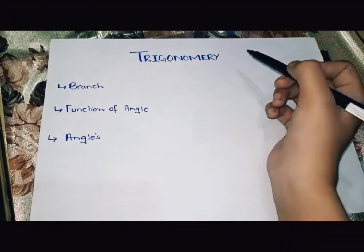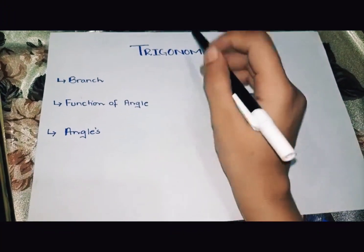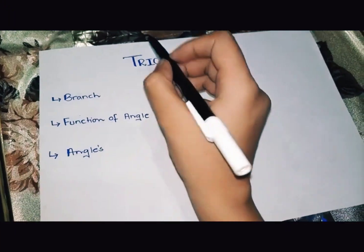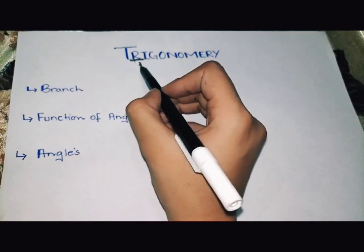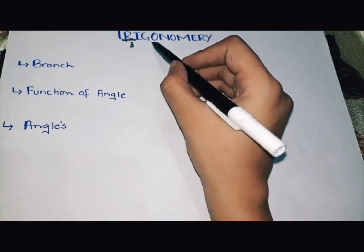Asalaam alaikum everyone. Today my topic is Trigonometry. In Trigonometry, we have the first word tri. Tri means three. Nometry means geometry.